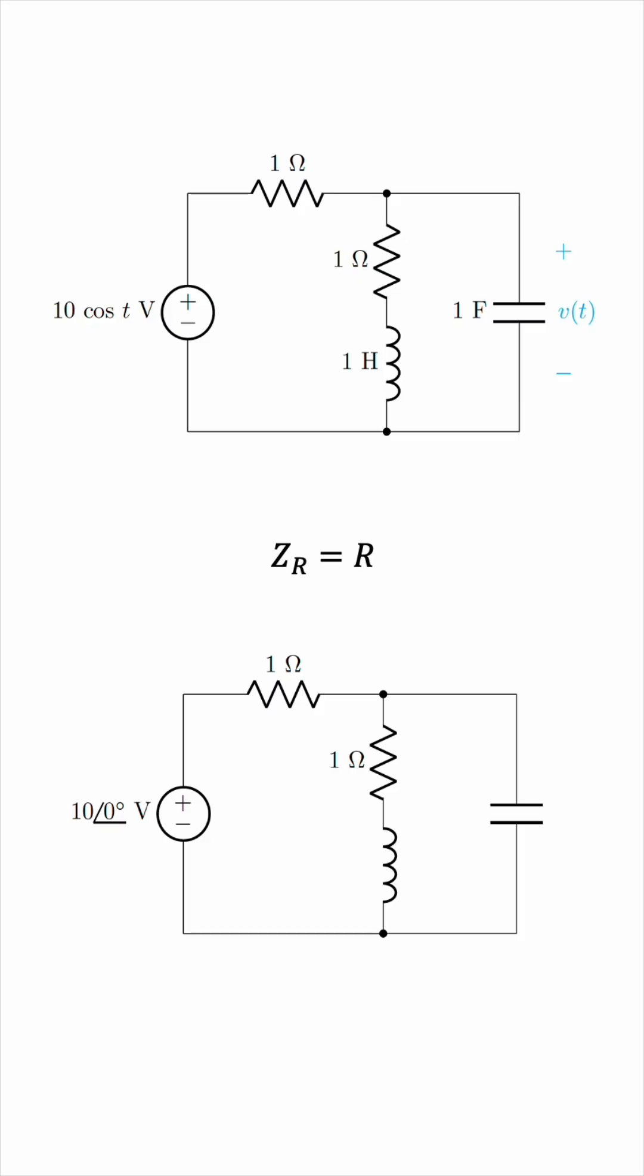The impedance of an inductor is J omega L, where J is the imaginary unit, and omega is the radial frequency. So what's omega in this case? Here's the thing. A key characteristic of linear circuits is that when you apply a sinusoidal input of a certain frequency, the output will also be a sinusoid of the exact same frequency, and that frequency will be maintained everywhere in the circuit.